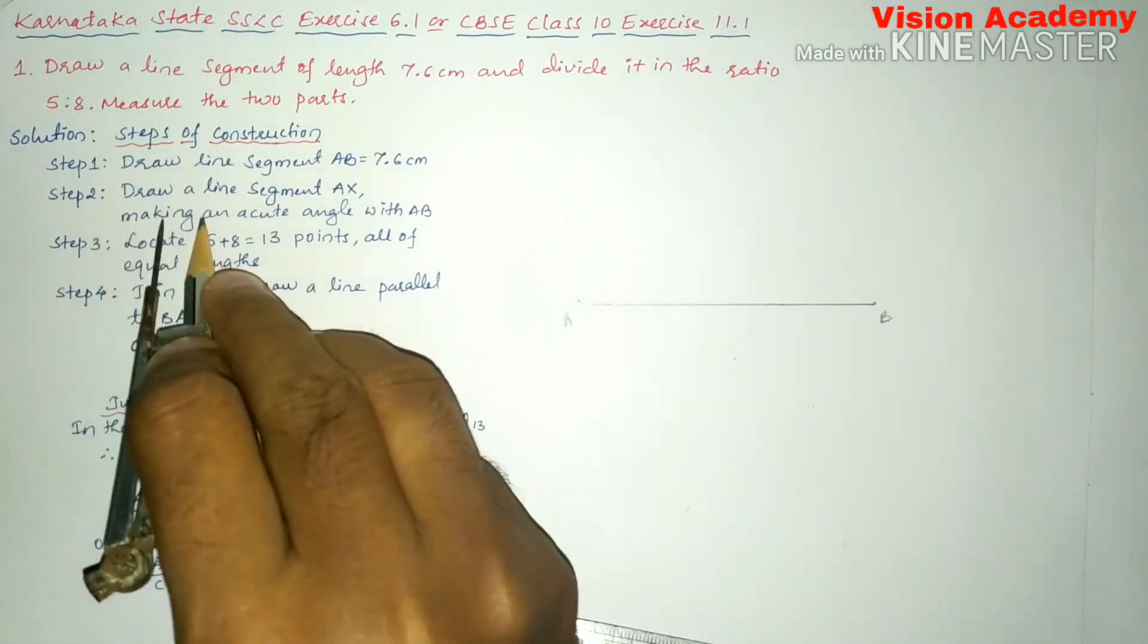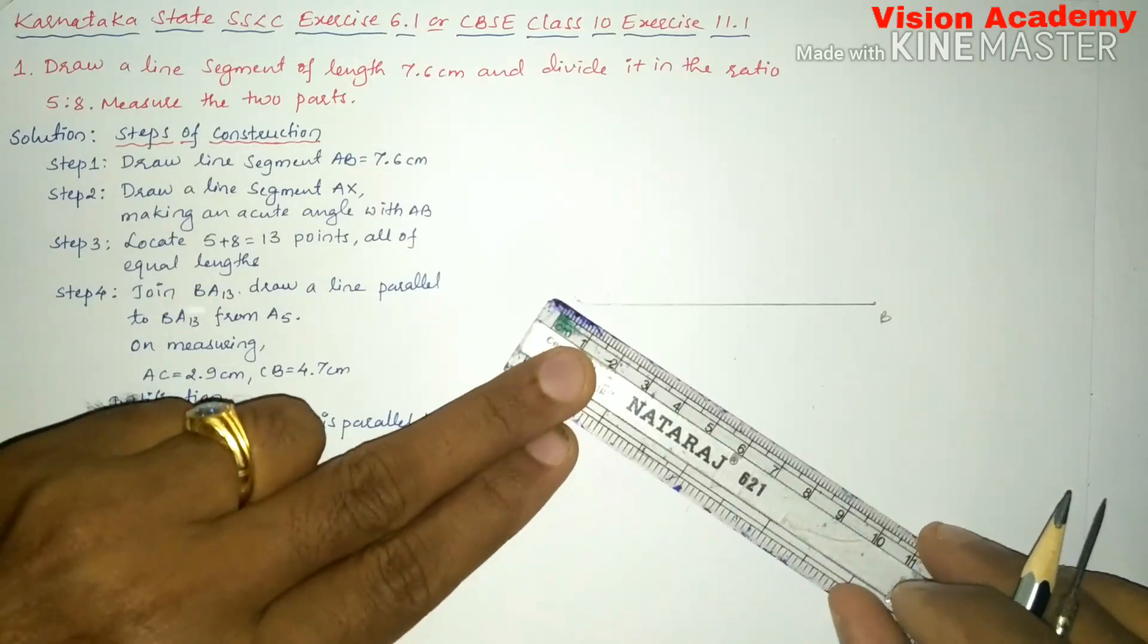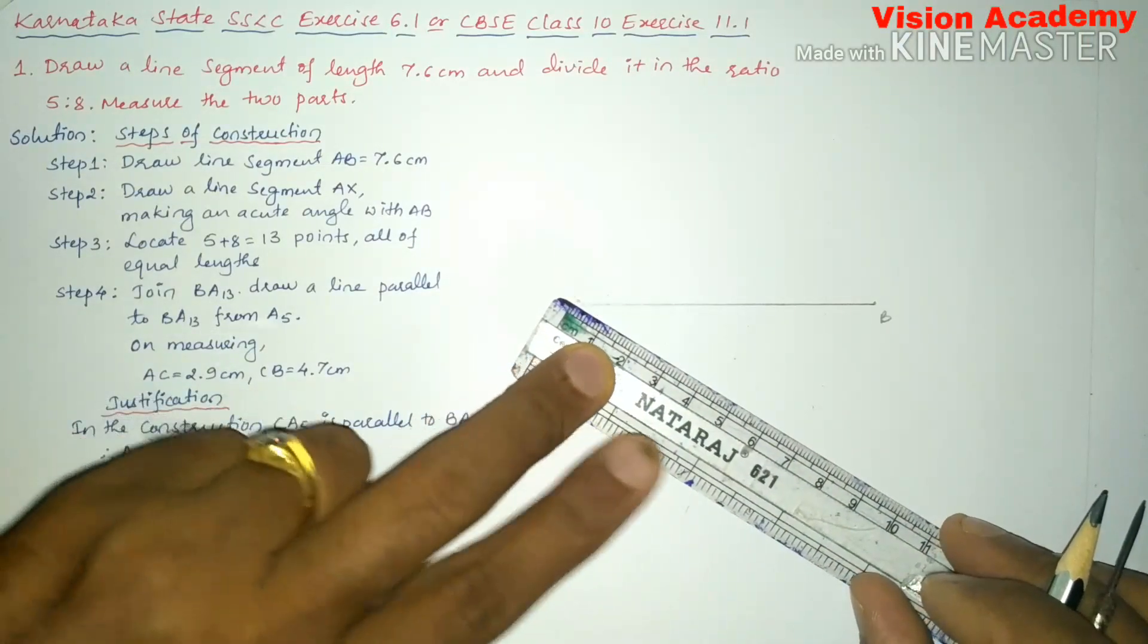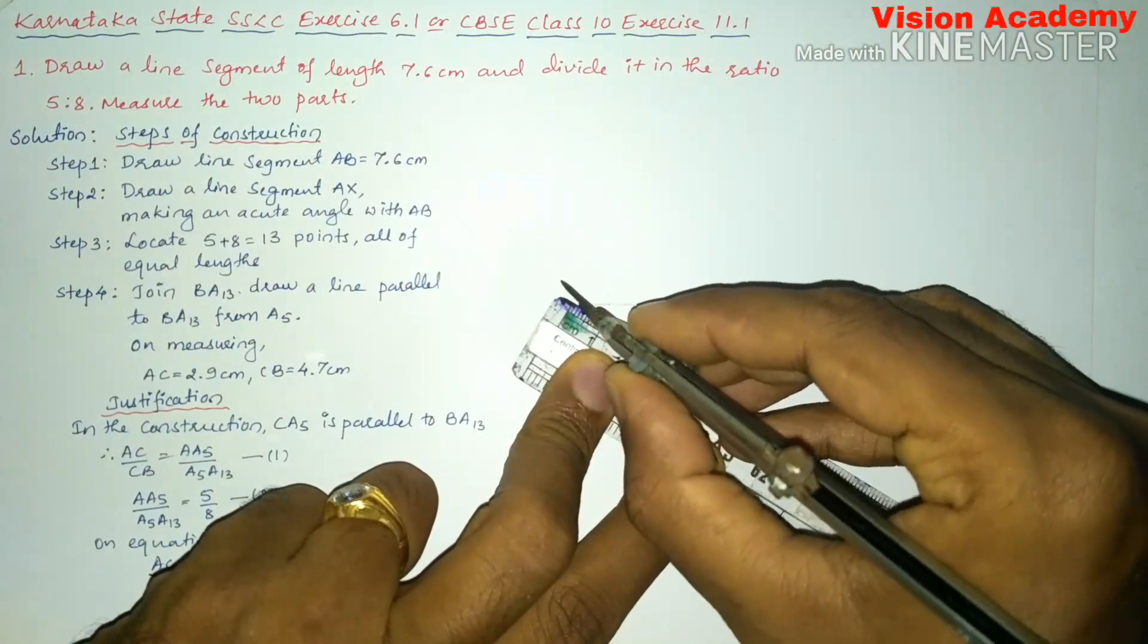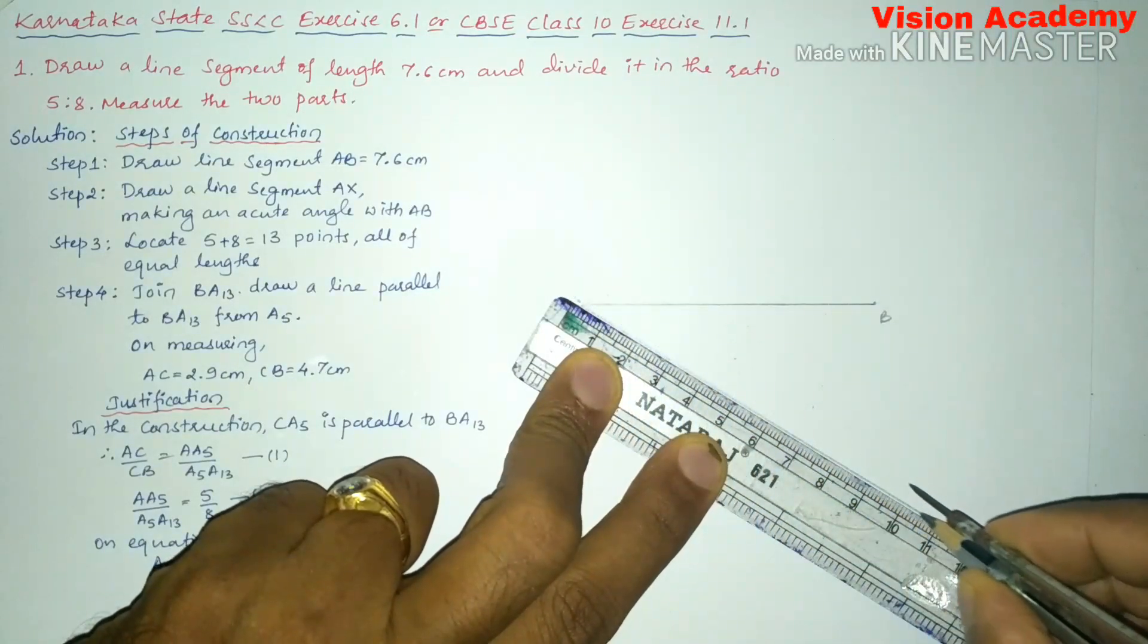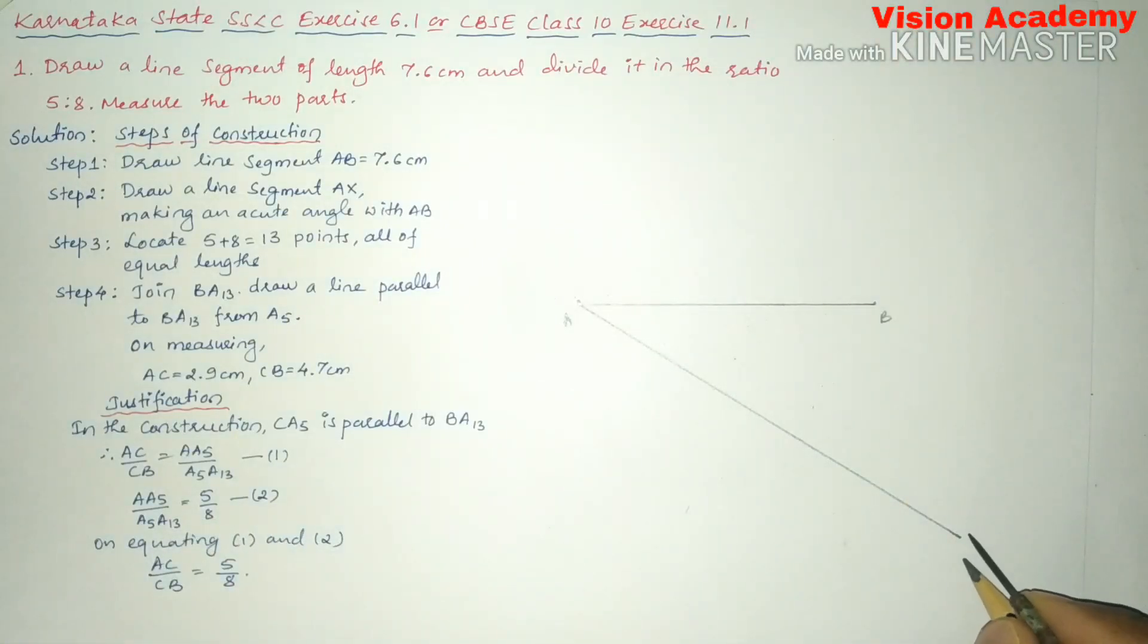Second step, draw a line segment AX making an acute angle with AB. So acute angle is less than 90 degrees. So let me draw a straight line. Let us say this one is AX.